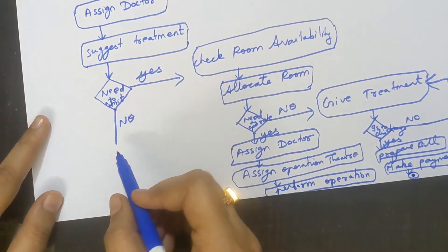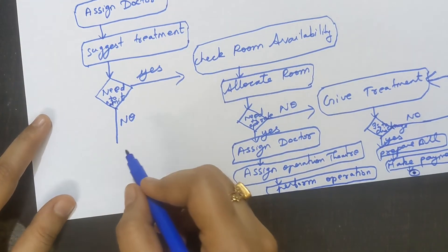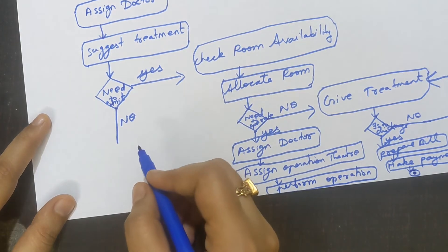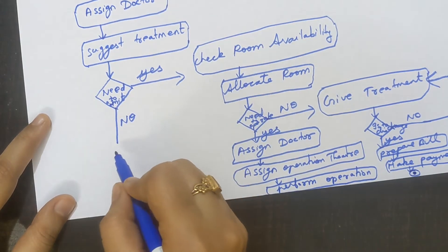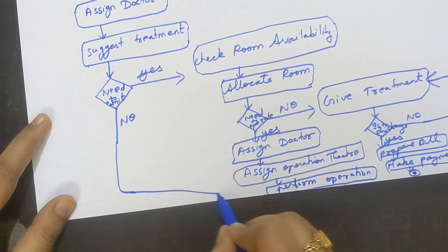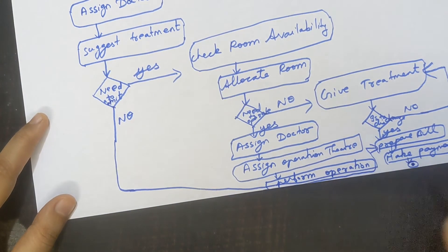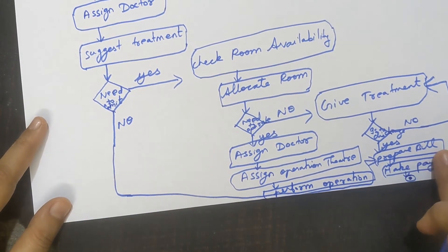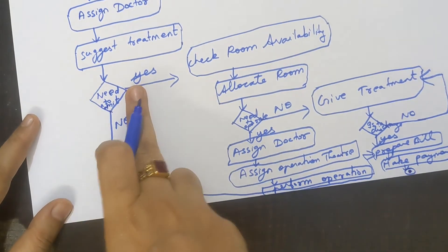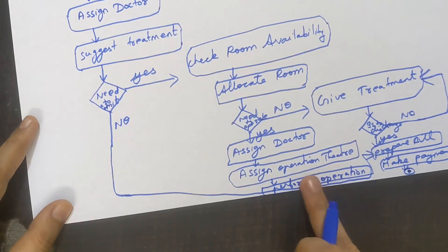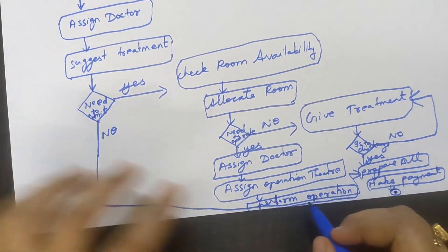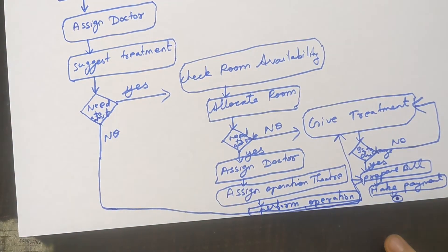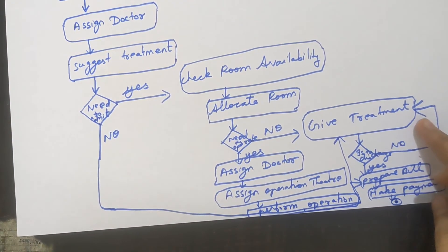Now, looking at the 'Need to Admit? — No' path: if no admission is needed, the arrow goes directly to the 'Prepare Bill' step, because the bill will be prepared and given directly, and the patient just makes payment. Also, after performing the operation, the arrow goes back to 'Give Treatment,' because treatment is given to the patient after the operation as well.